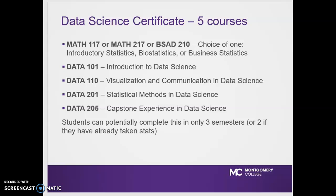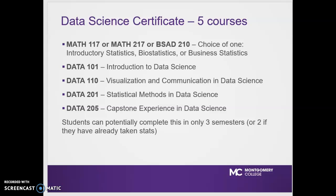Our data science certificate consists of five courses: an introductory statistics class — with a choice of three options: an intro statistics class, a biostatistics class, or a business statistics class. Data 101 is introduction to data science. Data 110 is data visualization and communication in data science. Data 201 is statistical methods in data science and advanced statistical methods. And Data 205 is our capstone experience in data science. Students could potentially complete this in three semesters, or even two semesters if they've already taken their introductory statistics class.